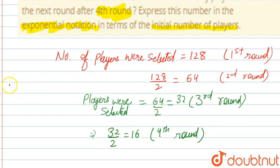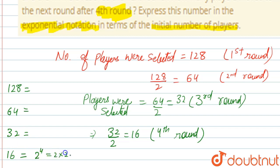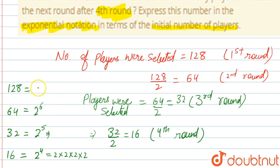In exponential notation: 128 is 2 to the power 7, 64 is 2 to the power 6, 32 is 2 to the power 5, and finally 16 is 2 to the power 4. This follows the law of exponents — if a number is repeating a certain number of times, it equals that number raised to the power of how many times it repeats. So 2 multiplied 4 times gives 16, which is 2 to the power 4. This is our final answer.